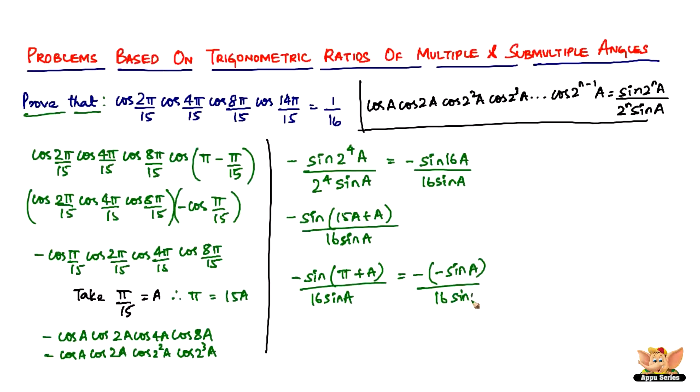Divided by 16 sine a, which is positive sine a divided by 16 sine a. The sines get cancelled and 1 by 16, it is the RHS.